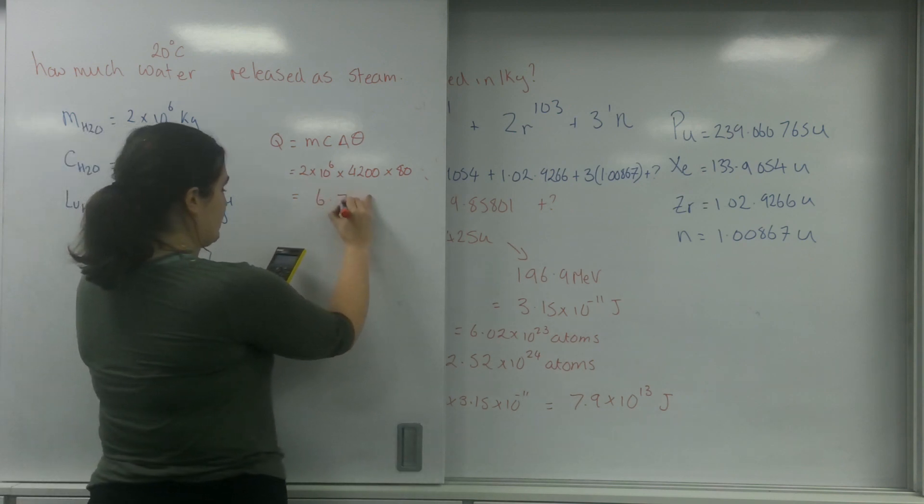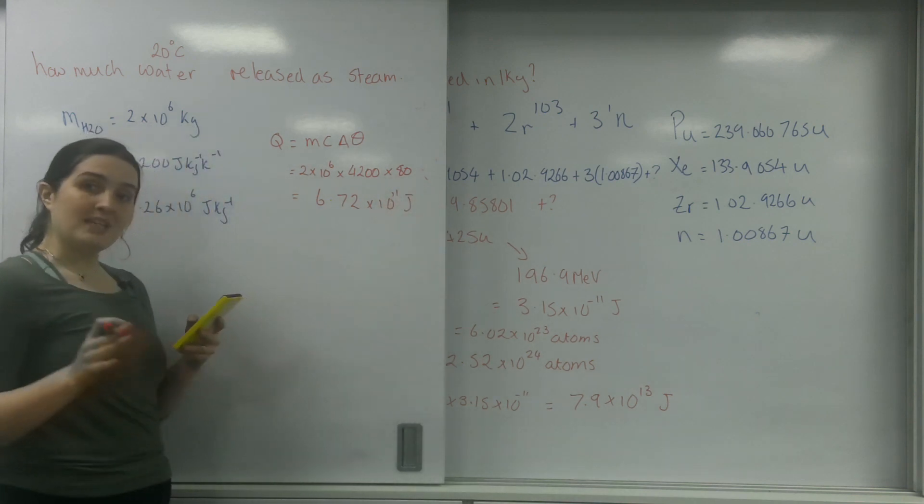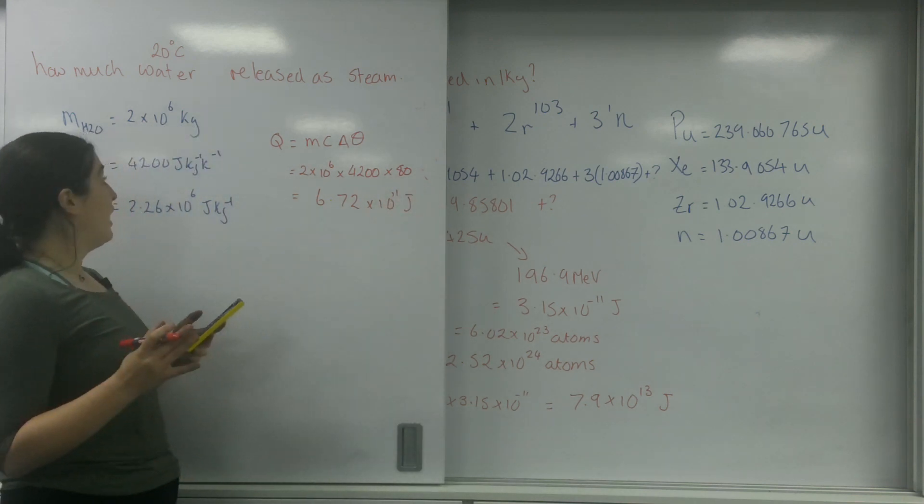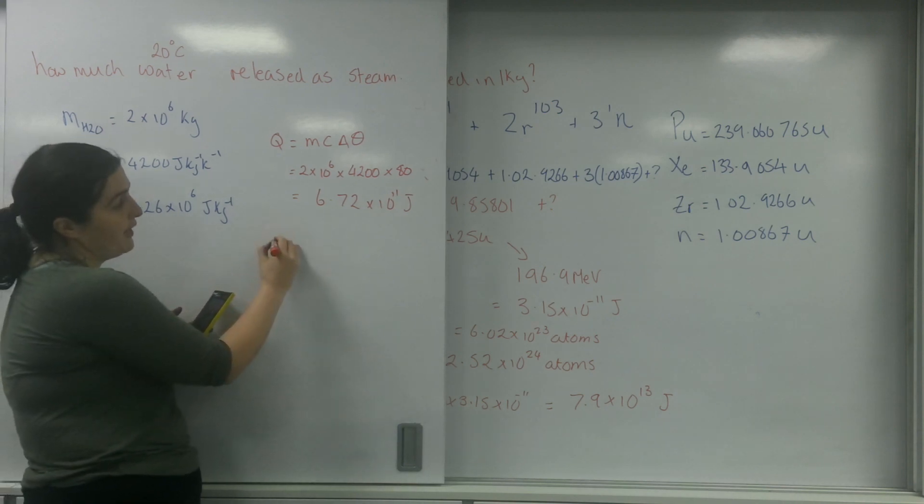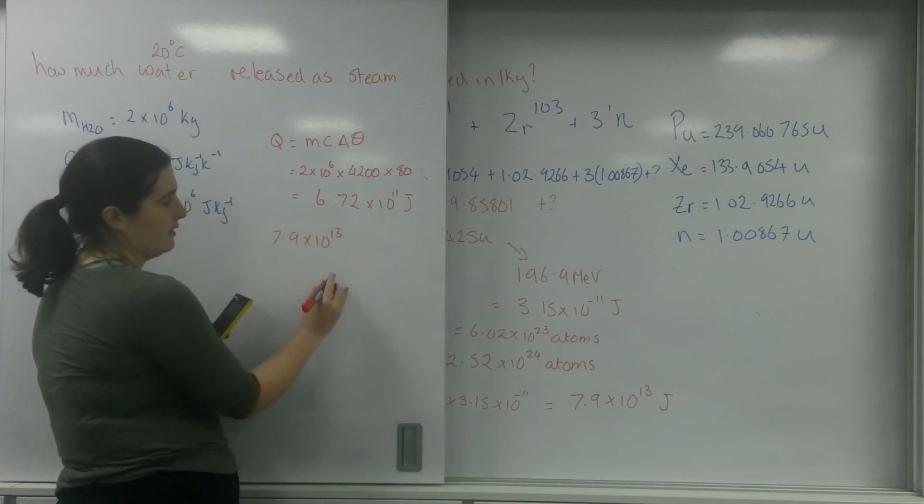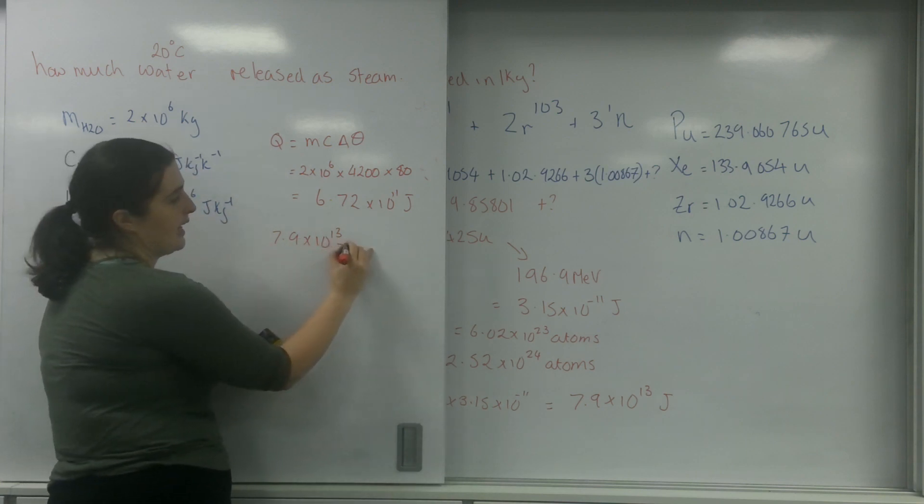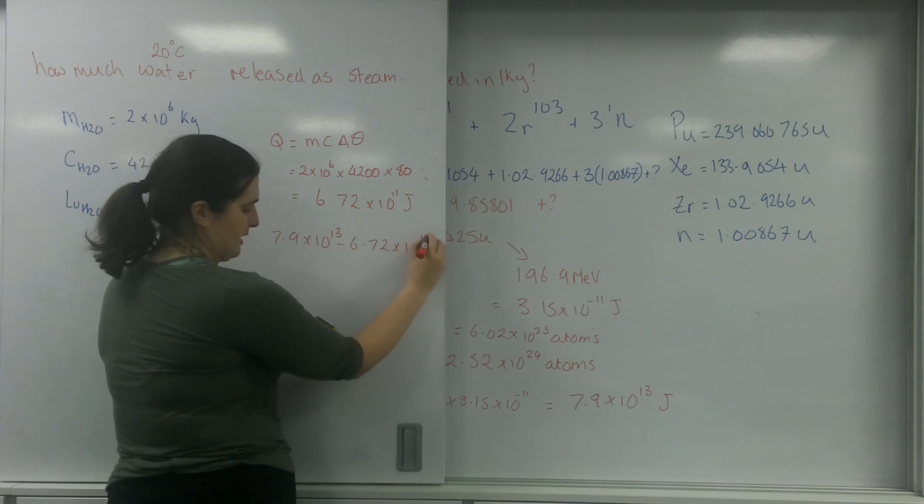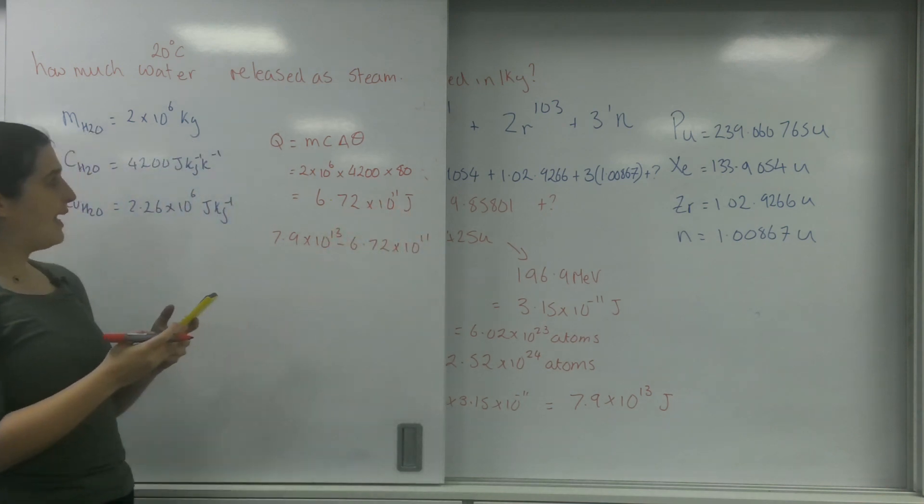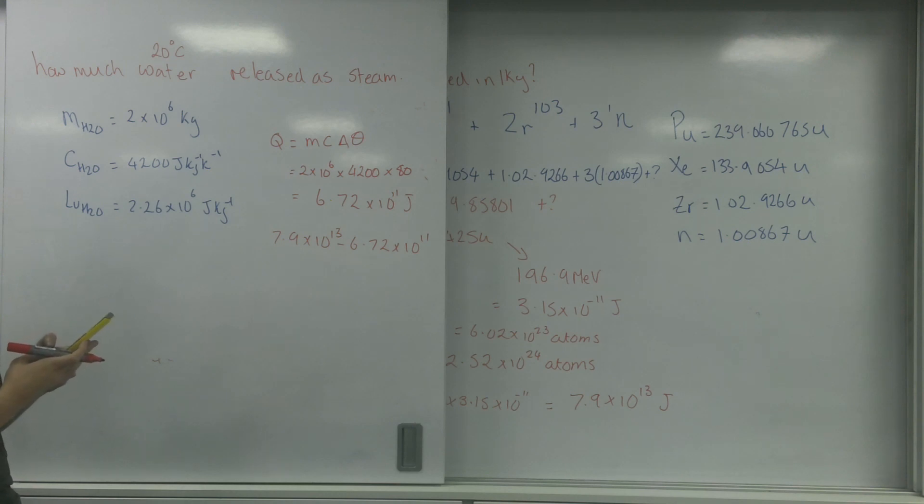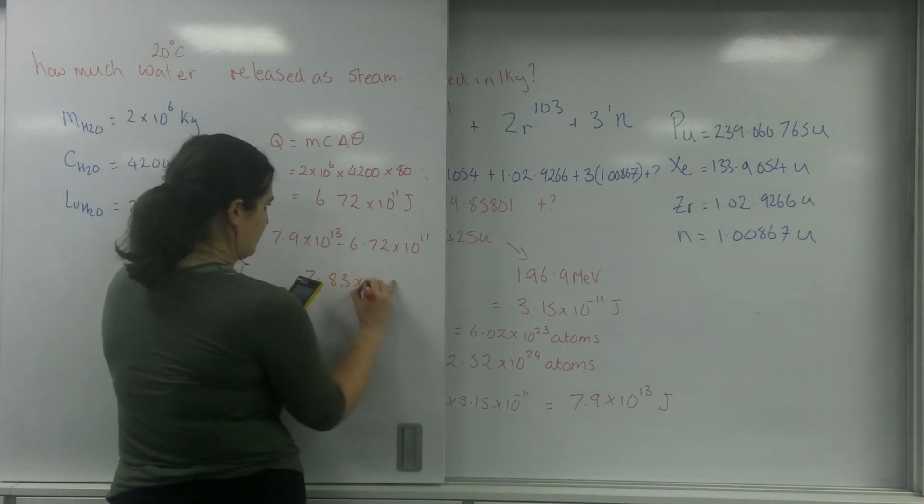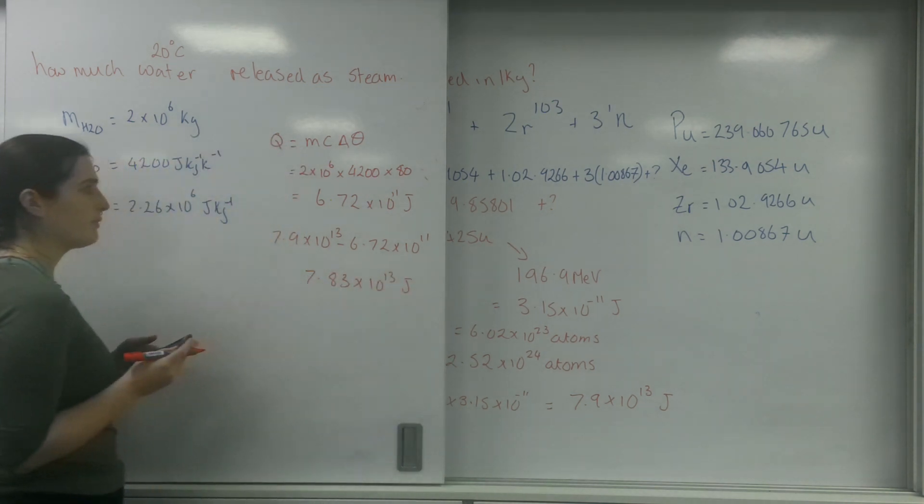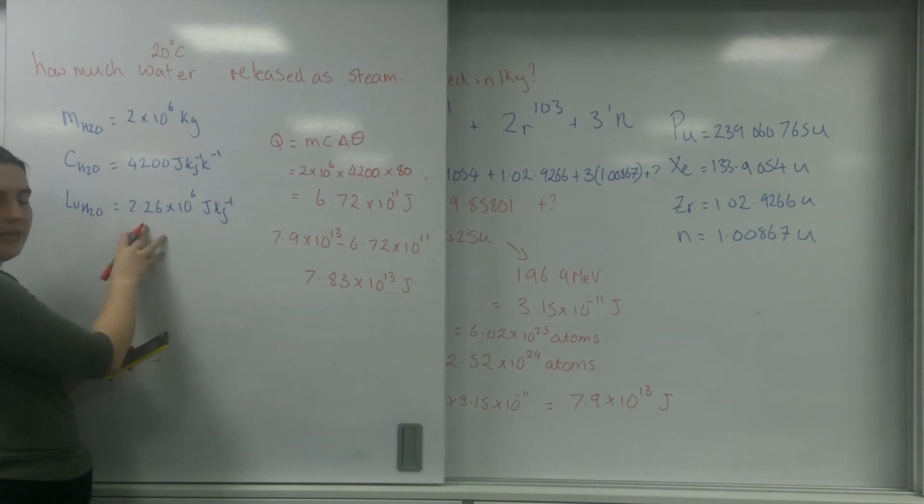Now I'll work out how much I've got left. 7.9 times 10 to the 13 take away 6.72 times 10 to the 11 is going to be 7.83 times 10 to the 13 joules remaining.